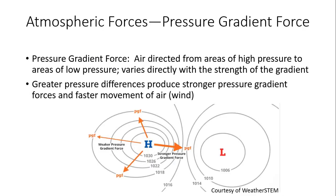We're going to start today's training by talking about atmospheric forces, beginning with the pressure gradient force. This occurs when air is directed from areas of high pressure to areas of low pressure. The pressure gradient force — sometimes abbreviated as PGF — is going to vary directly with the strength of the gradient. Greater pressure differences produce stronger pressure gradient forces and faster movement of air, which we of course feel as wind.